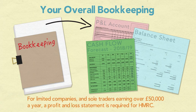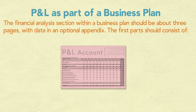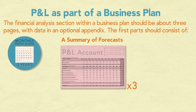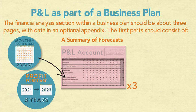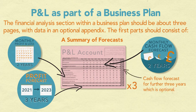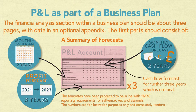For limited companies and sole traders earning over fifty thousand pounds a year, a profit and loss statement is required for HMRC. The financial analysis section within a business plan should be about three pages with data in an optional appendix. The first part should consist of a summary of forecasts: monthly profit and loss forecasts for two years, profit forecasts for a further three years, monthly cash flow forecasts for two years, and a cash flow forecast for a further three years, which is optional.